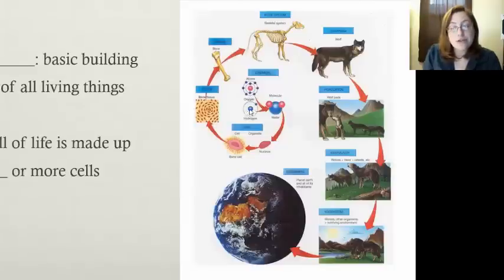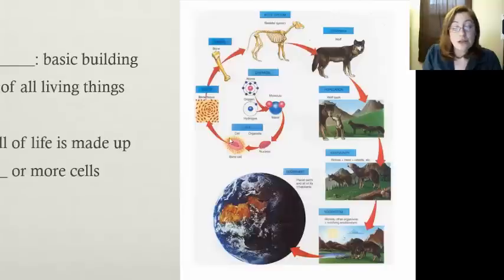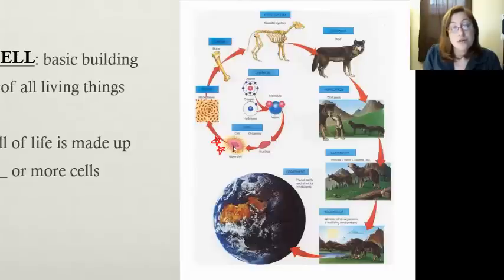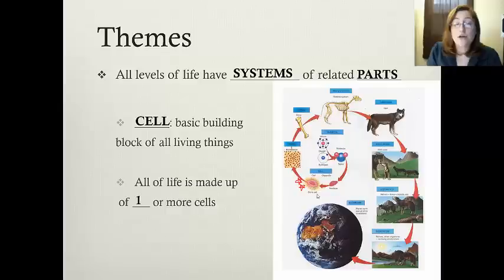Molecules build together to start making parts of cells — for example, the nucleus, which we call an organelle. That nucleus is one of the organelles that makes up a cell. The cell is a very important level of organization in life because the cell is the smallest unit that can still be considered its own living thing. If you have just an organelle like a nucleus, that is not considered its own living thing. All of life has to be made up of at least one or more cells.